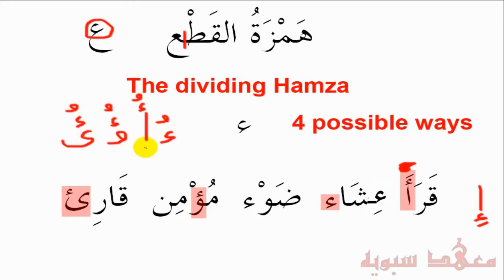Each of these will be pronounced just as an 'OO' sound. So the question is: if this occurs in a word, how do we know how to write it, given that there are four possible ways?